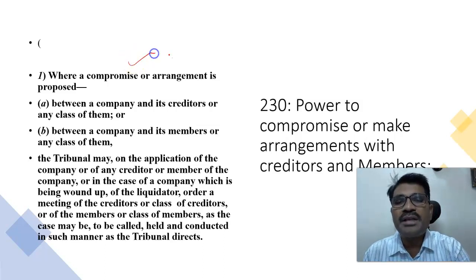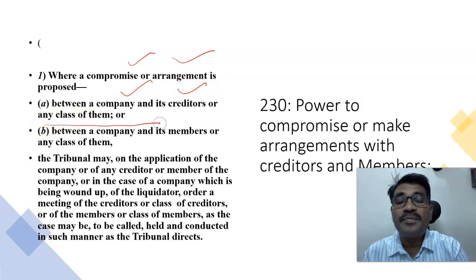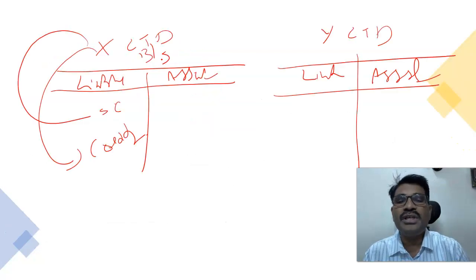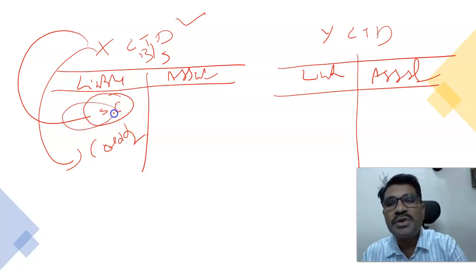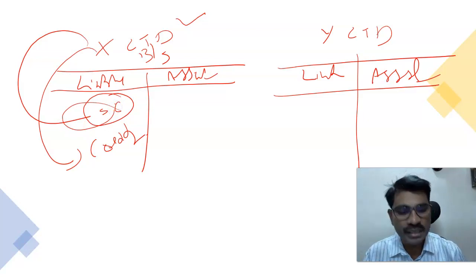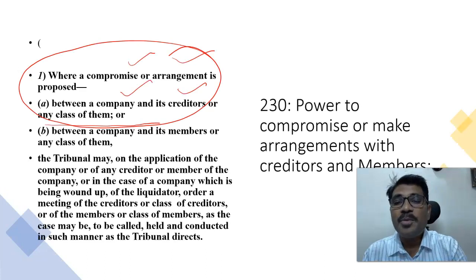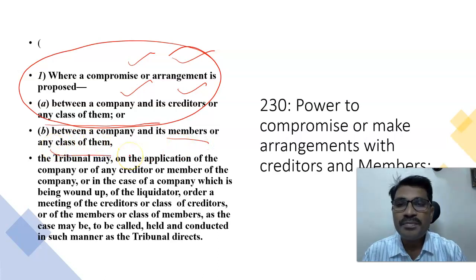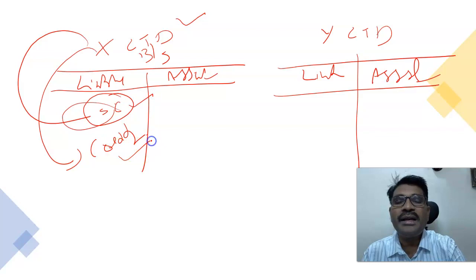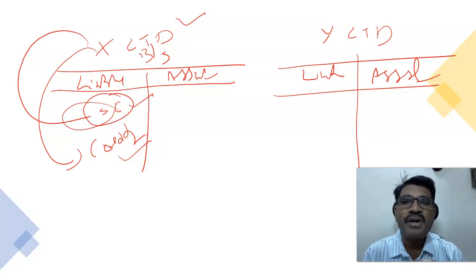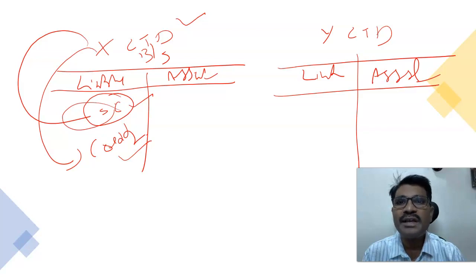Section 230 of the Companies Act deals with the situation where a compromise or arrangement is proposed between a company and its creditors or any class of them, or between a company and its members or any class of them. In simple terms, a company, among its shareholders or creditors, can form a particular scheme — we call it a scheme of compromise or scheme of arrangements.